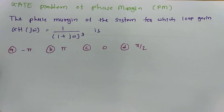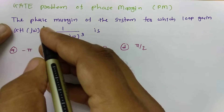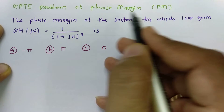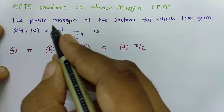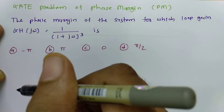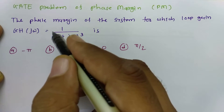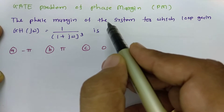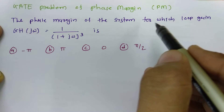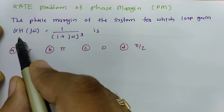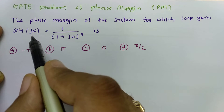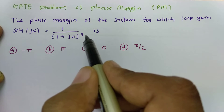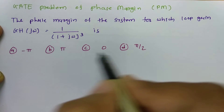Welcome to Control Engineering Playlist. In this session, I will be solving a GATE problem on phase margin. The question from a previous GATE examination is: the phase margin of the system for which loop gain is given by GH(jω) = 1 divided by (1 + jω)³ is how much?